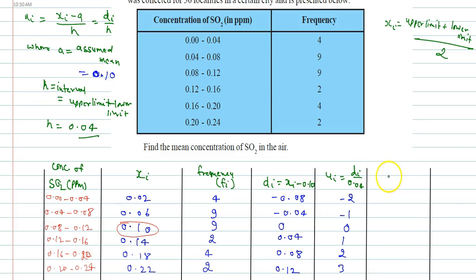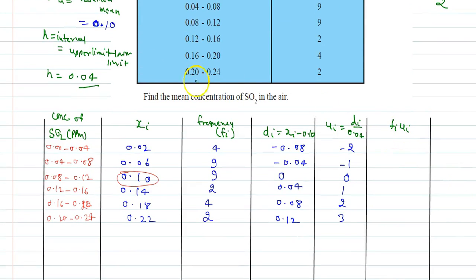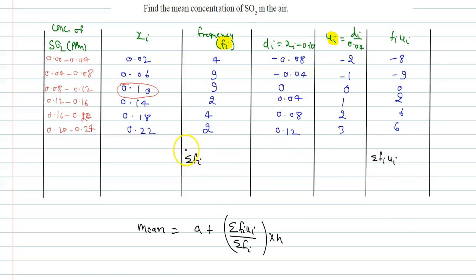Now I can calculate fi ui, which is the product of each ui with each frequency. So 4 into minus 2 is minus 8, 9 into minus 1 is minus 9, 0, 2 into 1 is 2, 4 into 2 is 8, and 2 into 3 is 6.